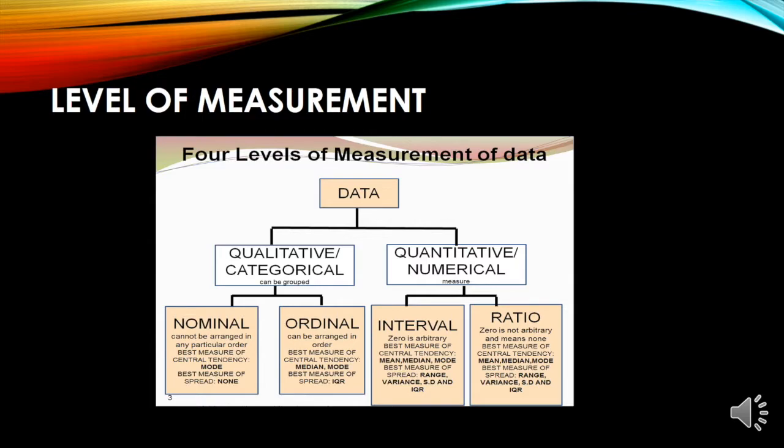Qualitative is divided into two, which is the nominal and the ordinal. When we say nominal, these numbers cannot be arranged in any particular order. Then, when we say ordinal, can be arranged in order. And when we say quantitative numerical measure, it is also divided into two. We have the interval and we have the ratio. When we say interval, zero is arbitrary. And the ratio, zero is not arbitrary.